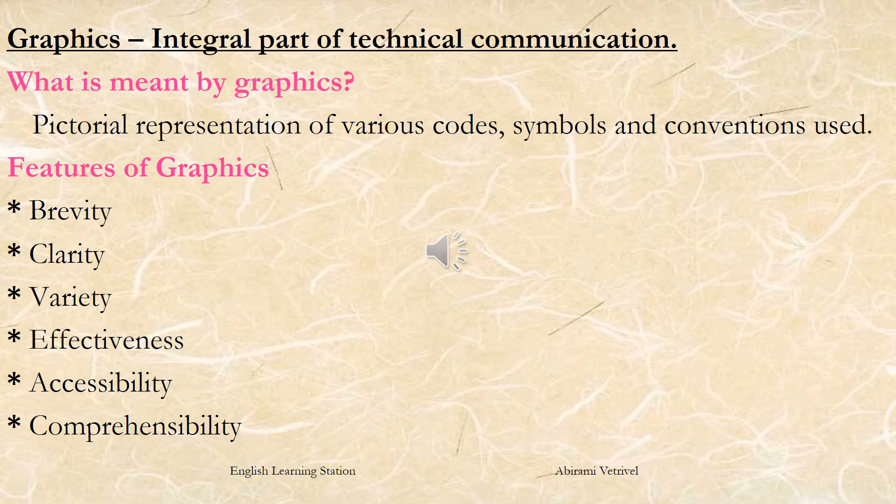Any set of symbols that communicates meaningful messages is a code. A language is a set of symbols and hence it is a code. Also, graphs, flowcharts, bar charts, pie charts and tables are all sets of symbols and therefore they are also codes.